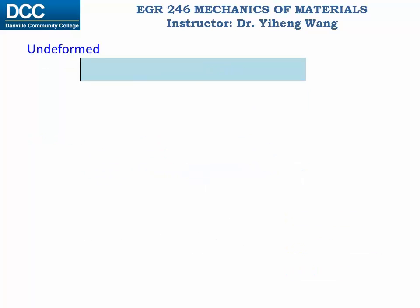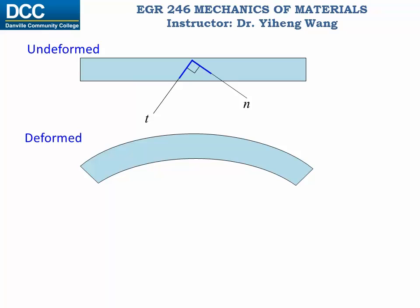For shear strain, again on this member before deformation, let's draw a pair of axes n and t, where n stands for normal and t stands for tangent, and these two directions are always perpendicular to each other. Along these two axes there are two short lengths on the member. After deformation, the original n and t axes have both been deformed, and the two short lengths have deformed along with them, and now this angle has changed into theta prime. When the two short lengths approach zero, the shear strain is defined for their point of intersection to be gamma nt equals half pi, which is the 90-degree right angle written in radian, minus the new angle theta prime. The subscript nt for gamma indicates that this shear strain is specifically defined for the orientation of the nt axis.